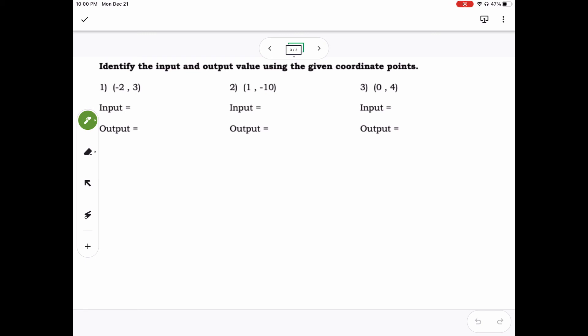For number 1, negative 2 would be our input because it's our x, and 3 is our output because it's our y.